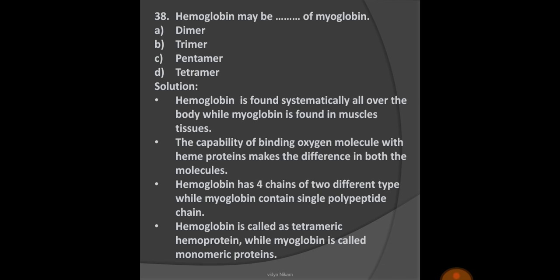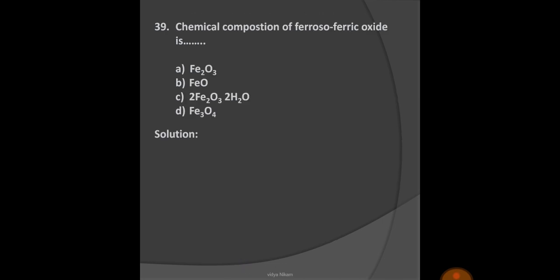Next question: Chemical composition of ferrosoferric oxide is? Options: A) Fe2O3, B) FeO, C) Fe2O3·H2O, D) Fe3O4. Ferrosoferric oxide is represented by Fe3O4. Option D is the right option.